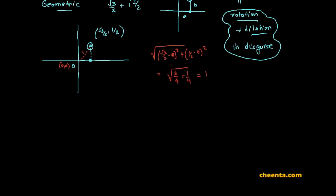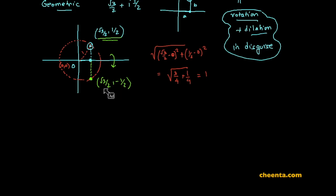It's often useful to draw the unit circle when you are working with points that are 1 unit away from the origin. So we have this unit circle, and the point (√3/2, 1/2) is on it. Now let's reflect the point (√3/2, 1/2) about the x-axis, giving us the point (√3/2, −1/2), which is also on the unit circle. Let's join these two points.